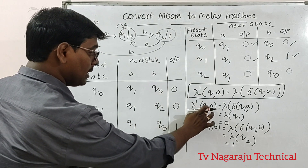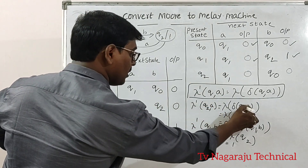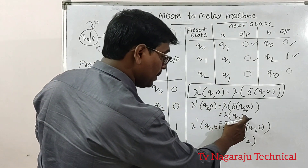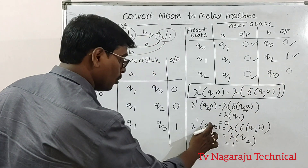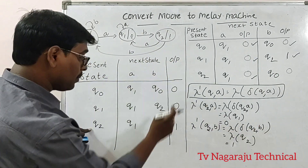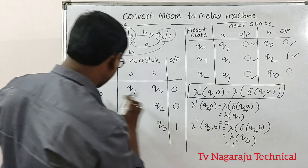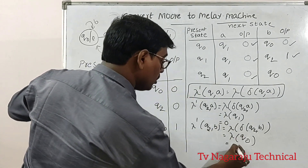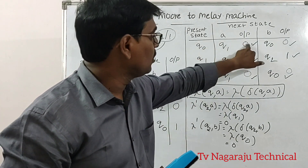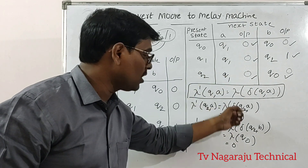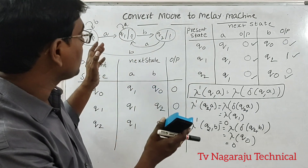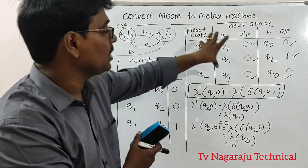Finally, Q2 on B: Q2 on B moves to Q0, and the output of Q0 is 0. This completes the Mealy machine. Observe — directly, if you move to a state, write down the corresponding output. Or use the formula step by step for all states and all input symbols. This is the way to convert a Moore machine into a Mealy machine.